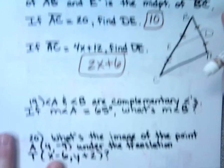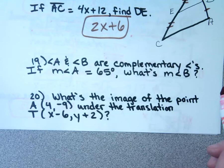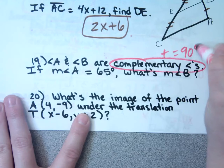Number 19: angle A and angle B are complementary angles. If the measure of angle A is 65, what's the measure of angle B? Complementary angles add to equal 90 degrees. So if one angle is 65, the other would be 25.